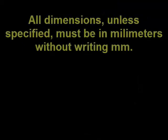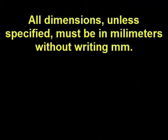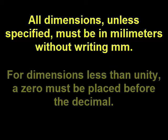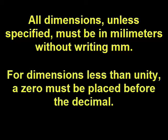Leader lines are used to dimension a circle. All dimensions, unless specified, must be in millimeters without writing 'mm'. For dimensions less than unity, a zero must be placed before the decimal point.